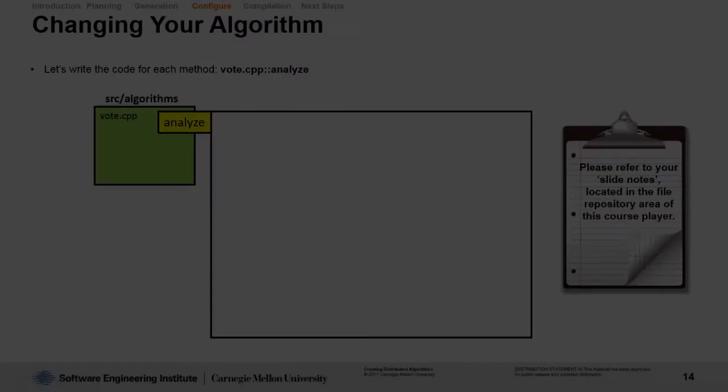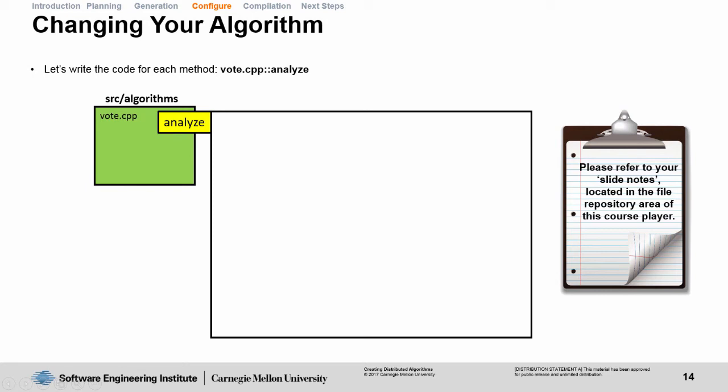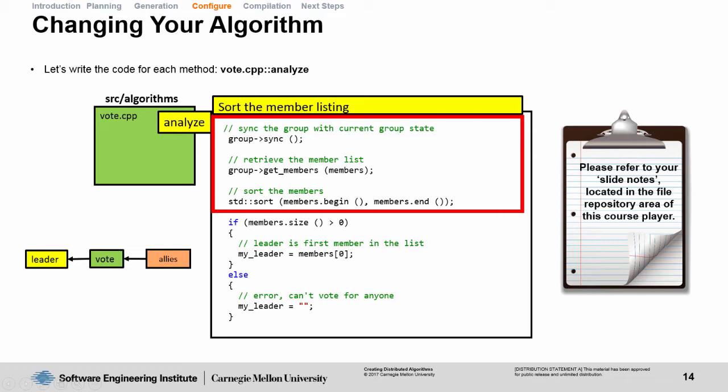Next, let's modify the analyze method inside of vote. The first step is sorting the member listing. First, we synchronize the group with whatever changes have been made to the group, including adding new members or removing them. Then we get the member list into our members variable, and we sort this list in ascending order. Next, we cast our vote for who should be leader by looking at the lowest ranked member in the group member list.